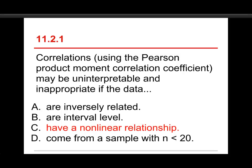The answer is C, have a nonlinear relationship. I'll show you that in a second, but A, inversely related, no, that just means a negative correlation, and that's perfectly fine. It's just as likely as a positive correlation. B, interval level, well, you actually need to have interval or ratio level to do the standard version of the correlation. And then comes from a sample of n less than 20, obviously we would like to have bigger samples, but it still works perfectly fine. In fact, I think you only need three data points to actually be able to compute a correlation coefficient.